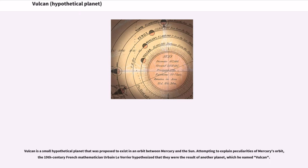Vulcan is a small hypothetical planet that was proposed to exist in an orbit between Mercury and the Sun. Attempting to explain peculiarities of Mercury's orbit, the 19th century French mathematician Urban Le Verrier hypothesized that they were the result of another planet, which he named Vulcan.